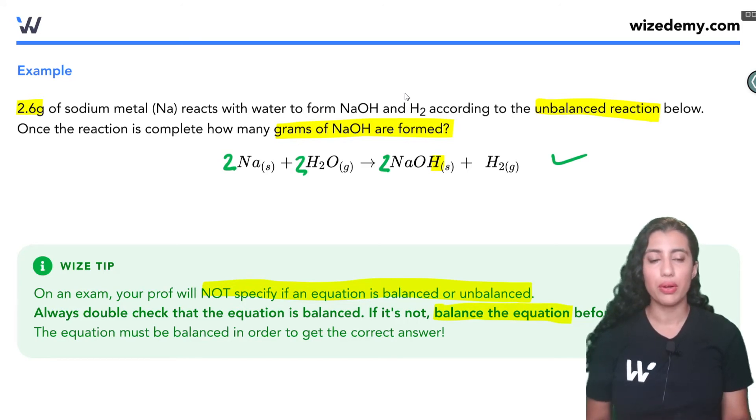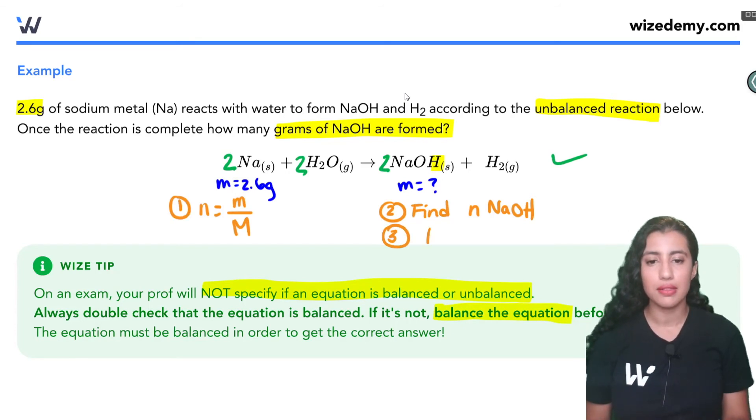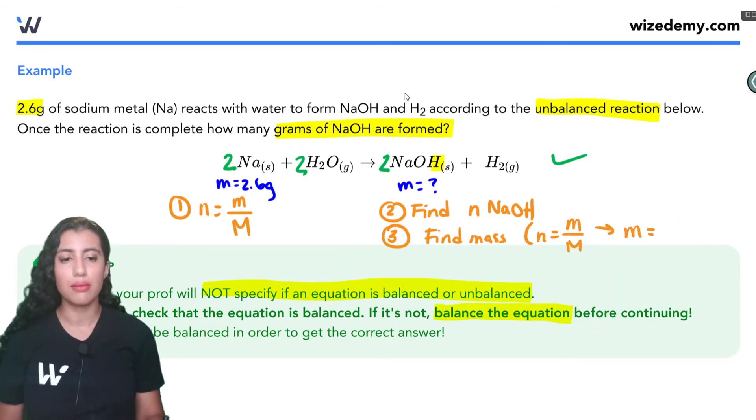So now let's write in what we're being given here. We have the mass is 2.6 grams for sodium and we're asked how many grams of sodium hydroxide are formed. So what we're going to want to do here is like we said we're always going to want to figure out moles of what we can. So I can see that we can find the moles of sodium using this equation n is equal to little m over big M. Okay, once I find the moles using the stoichiometric coefficients the second thing I'm going to do is find the moles of sodium hydroxide. And then finally once I have the moles of sodium hydroxide, I'll be able to find the mass. Again using this equation n is equal to little m over big M. We would rearrange that to solve for mass where we take the moles of sodium hydroxide and multiply by its molar mass.